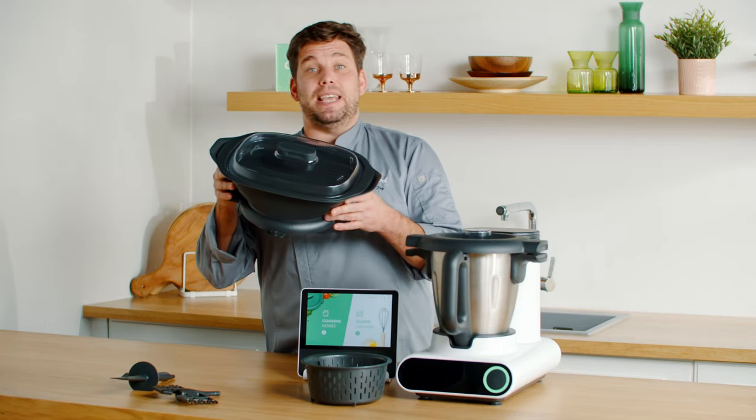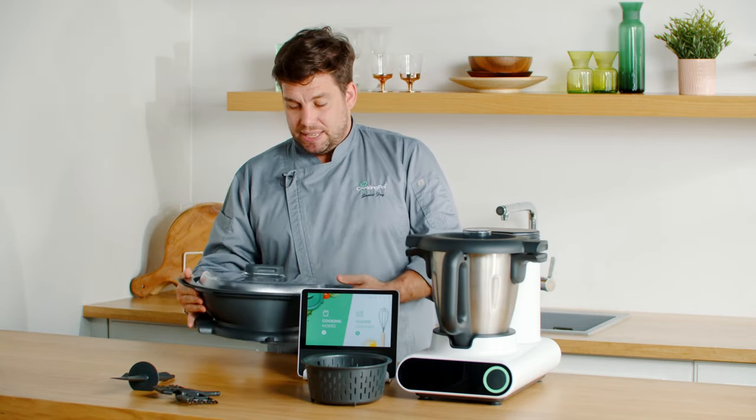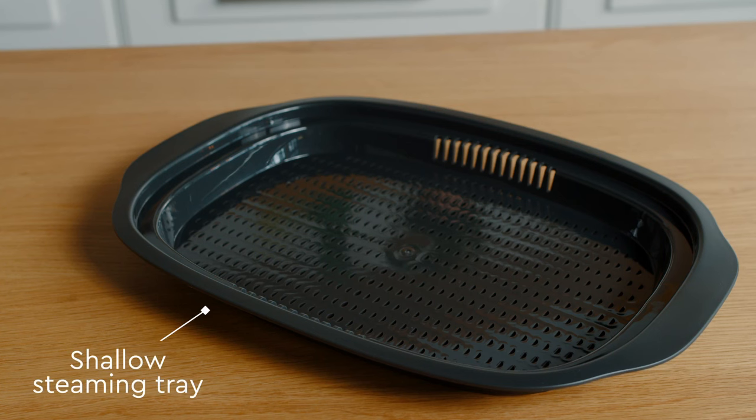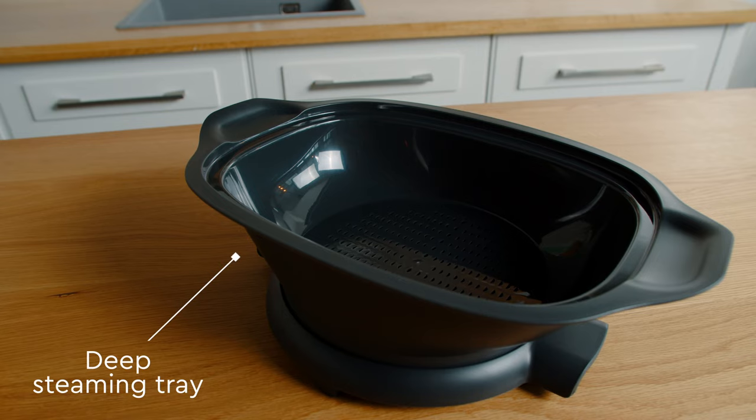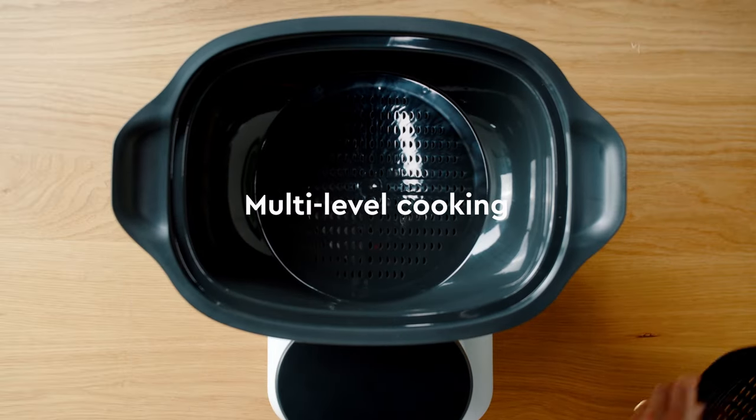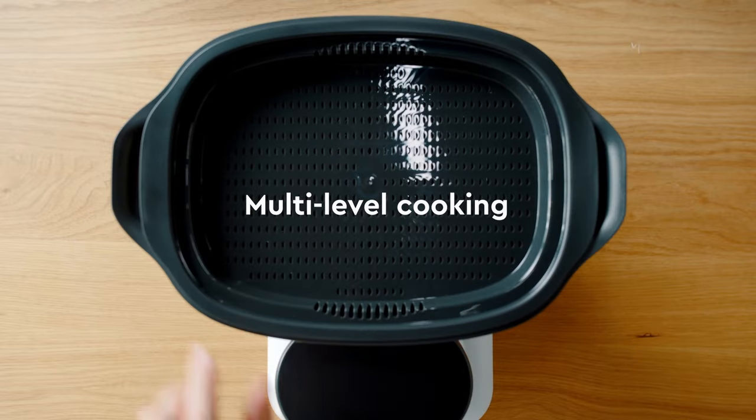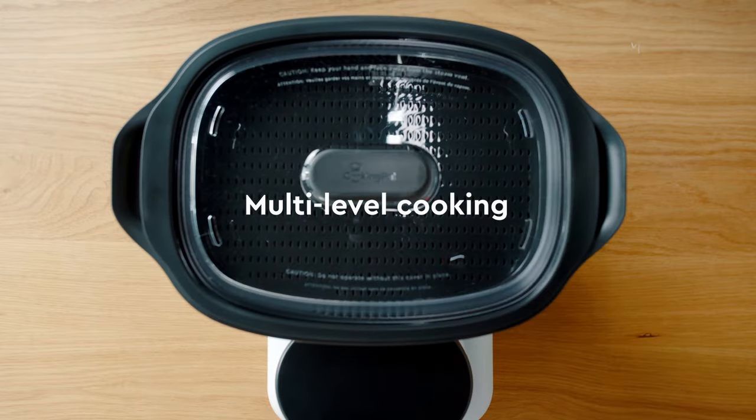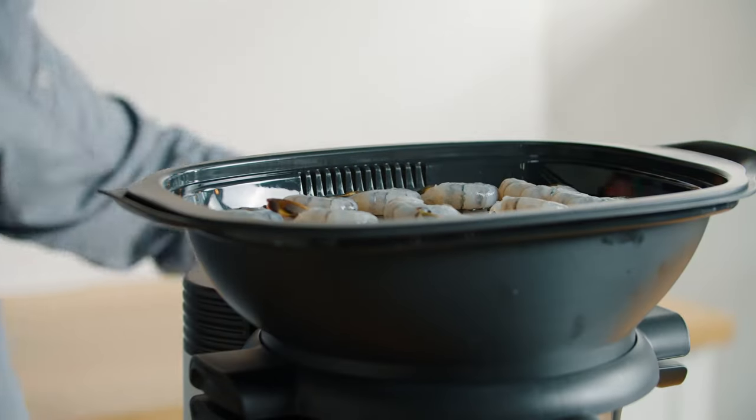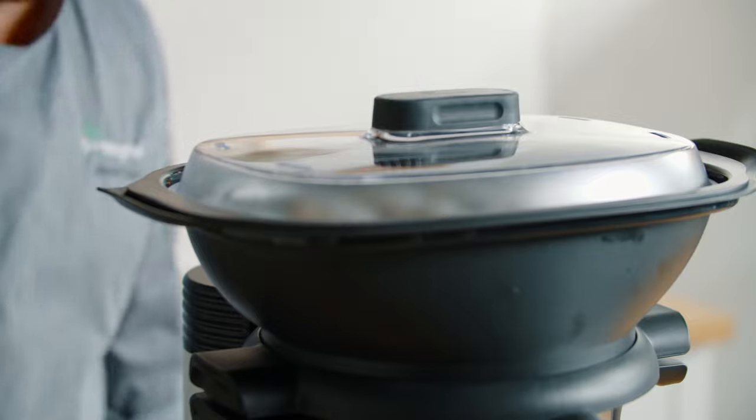Here what we have is our steaming set. Now within the steaming set, we have a lid, a shallow steaming tray and then also the deep steaming tray. Using the steaming sets allows you to multi-level cook, meaning that you can cook the whole meal for the family in all one go. You would insert the deep steaming tray, attach the shallow steaming tray and then lastly the lid goes on.